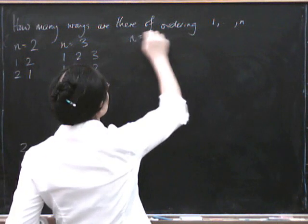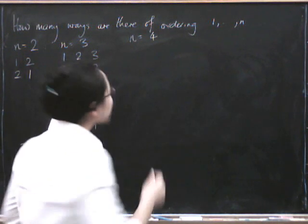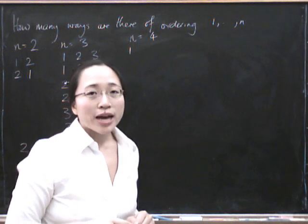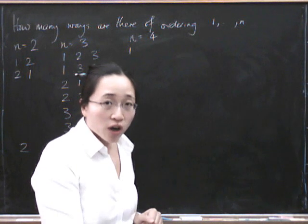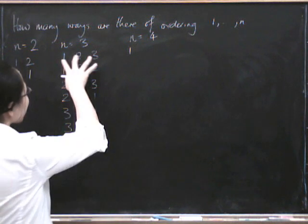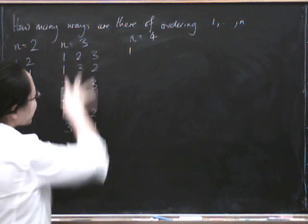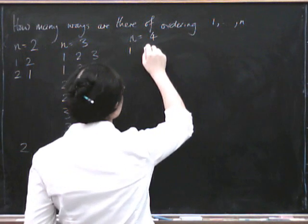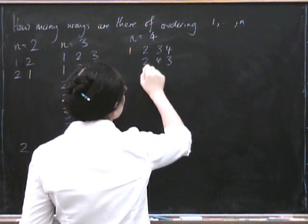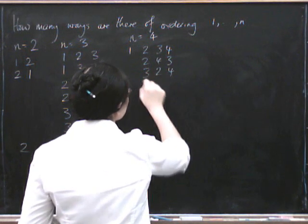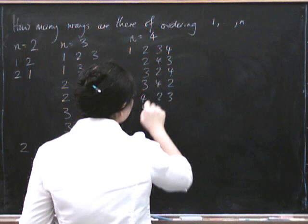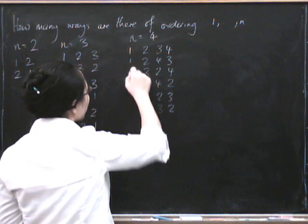So let's try n equals 4. First, let's do all the orderings beginning with 1. We know that 1 is going first, so we have to put 2, 3 and 4 in some order. And you might notice that ordering 2, 3 and 4 is just like ordering 1, 2, 3 — so there should be 6 ways. Those are: 2,3,4 — 2,4,3 — 3,2,4 — 3,4,2 — 4,2,3 — and 4,3,2. So all of those can have a 1 at the beginning, giving 6 ways.